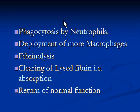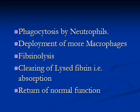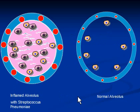If neutrophils manage to finish the bacterial population, more macrophages are deployed. Towards the end of the process, fibrin lysis begins — fibrin starts to break down and is absorbed by the interstitial lung tissue. Finally, the lung resumes normal function.